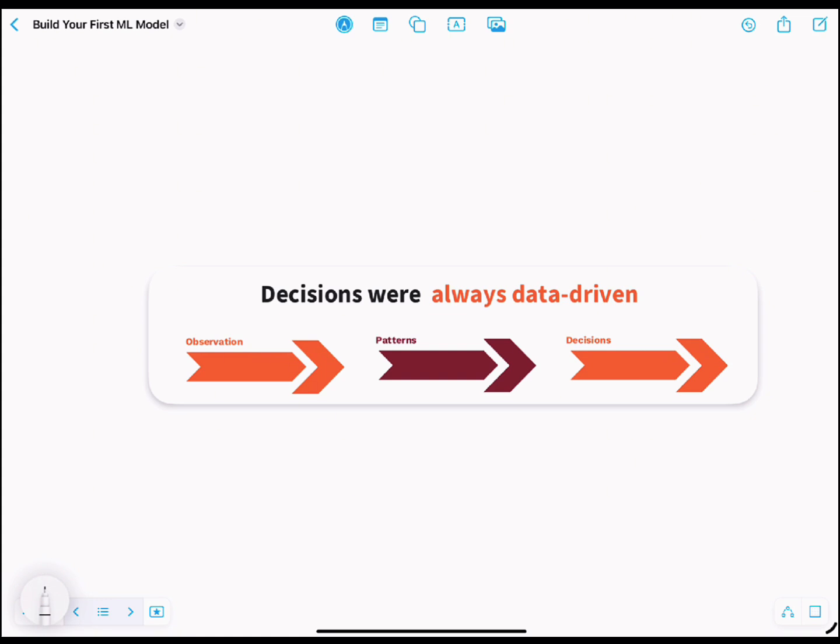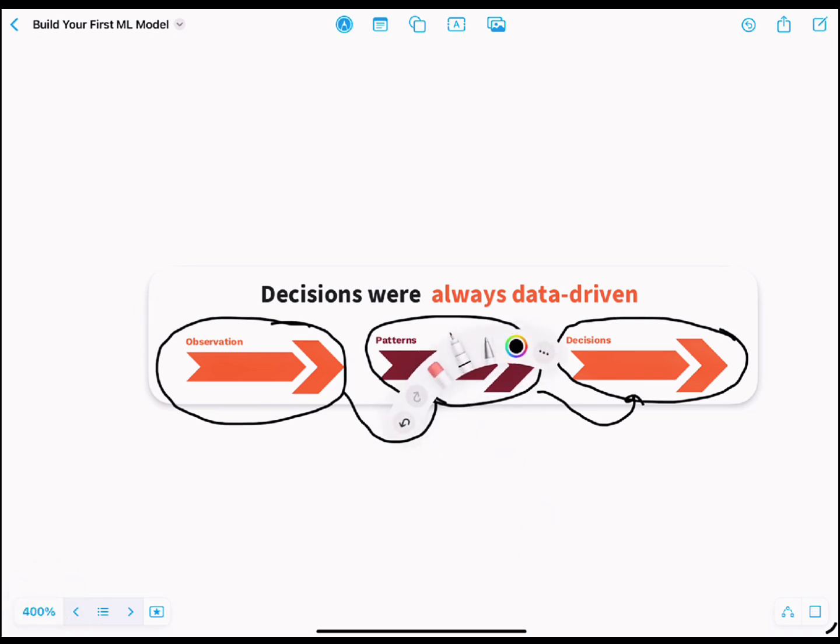Let me break it down. First came observations - we watched the world closely. Then came patterns, because our brains are basically natural pattern detectors. And finally, we made decisions, smart ones based on those patterns. That's data science 1.0, the old school edition.